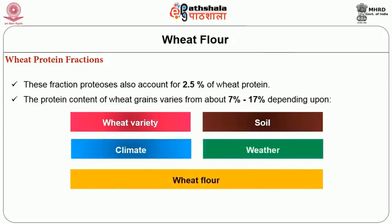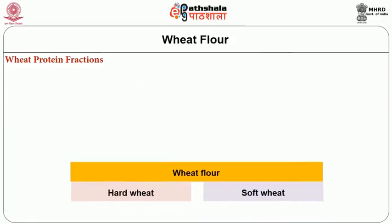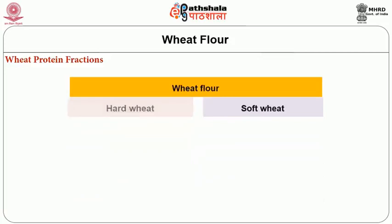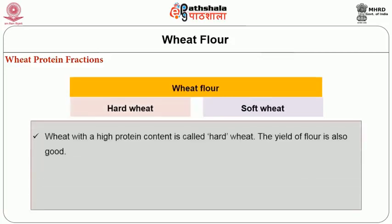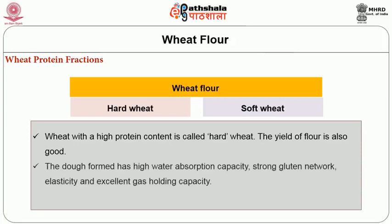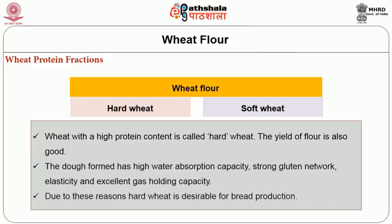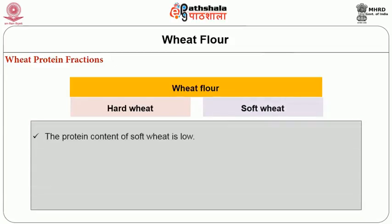Commercial wheat flour is obtained from two types of wheat: hard wheat and soft wheat. Hard wheat has a high protein content, good flour yield, high water absorption capacity, strong gluten network, elasticity, and excellent gas holding capacity. Due to these characteristics, hard wheat is desirable for bread production. Soft wheat has a comparatively lower protein content, and the dough formed has poor water absorption capacity and poor tolerance to mixing and fermentation.